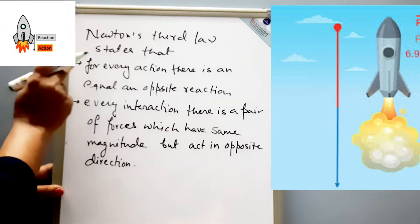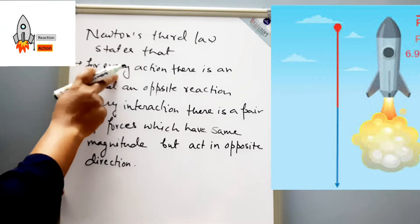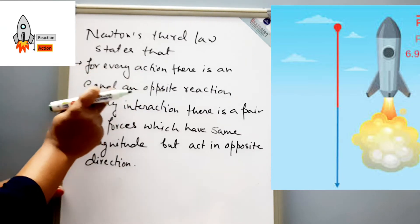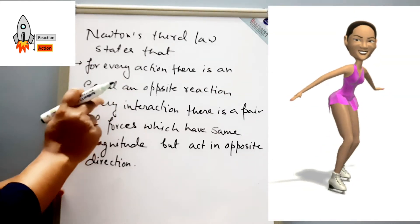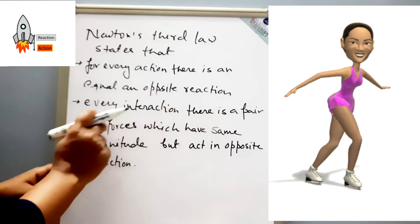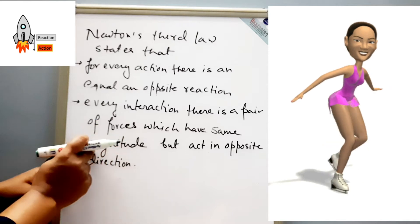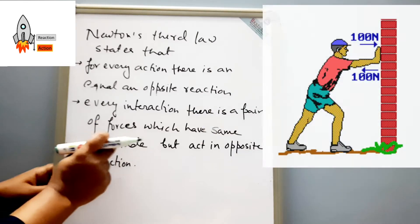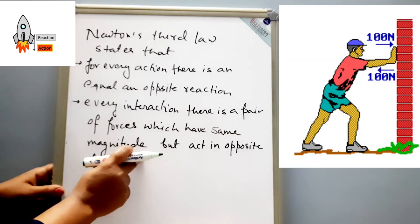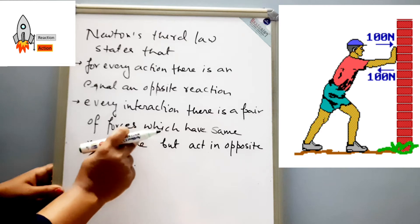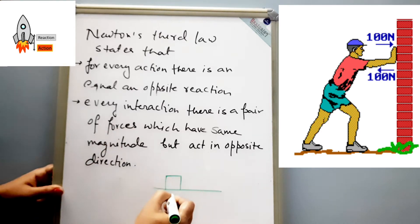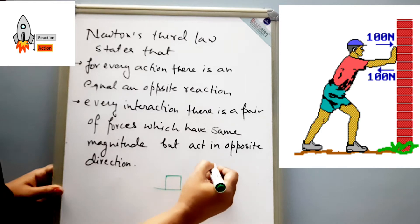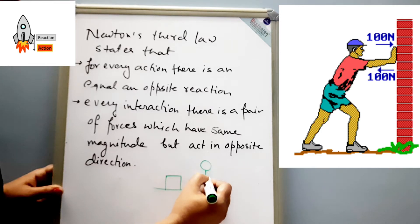As per Newton's third law, for every action there is an equal and opposite reaction. We can understand it this way: in every interaction there is a pair of forces which have the same magnitude but act in opposite directions. We will understand this with the help of a diagram. Suppose this is a surface, and on the surface there is a box being pulled by this boy.